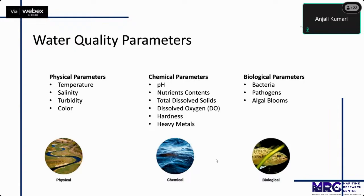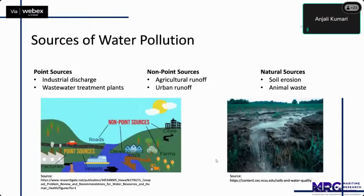Moving on to the sources of pollution: point sources include industrial discharge and wastewater treatment plant discharge. Non-point sources include agricultural and urban runoff. Natural sources can also cause water pollution, for example soil erosion and animal waste.